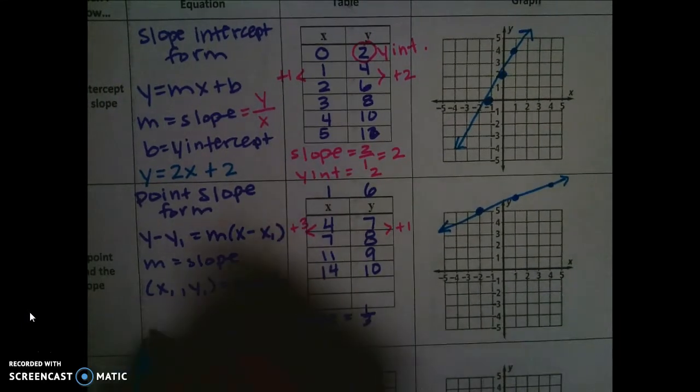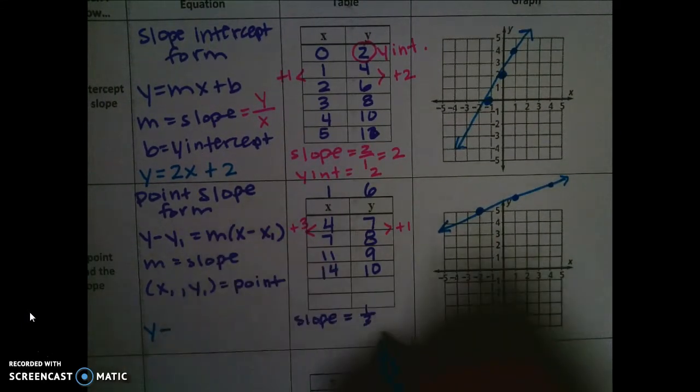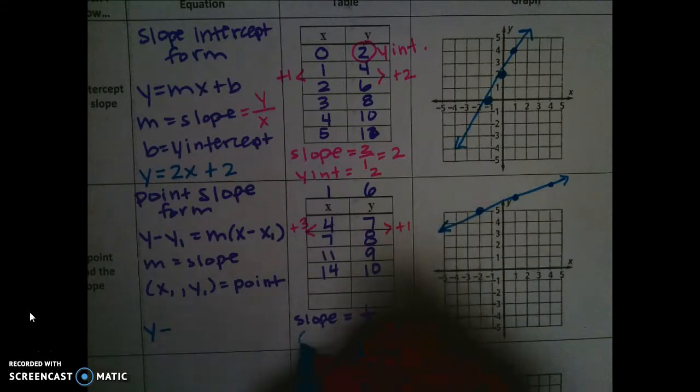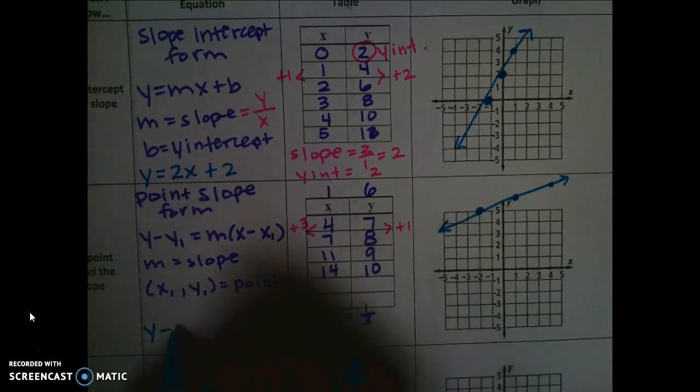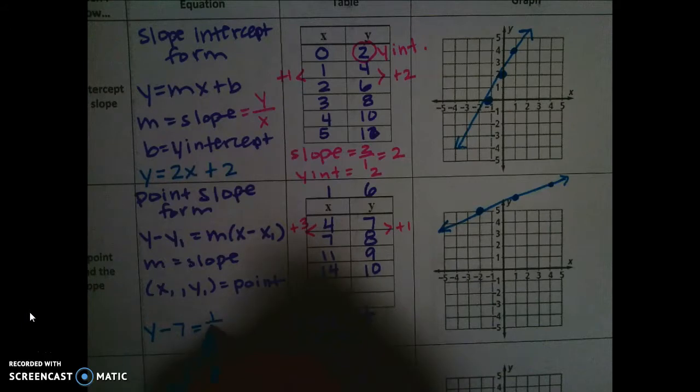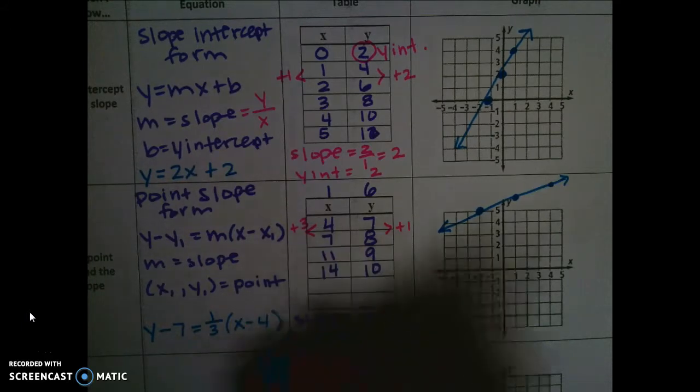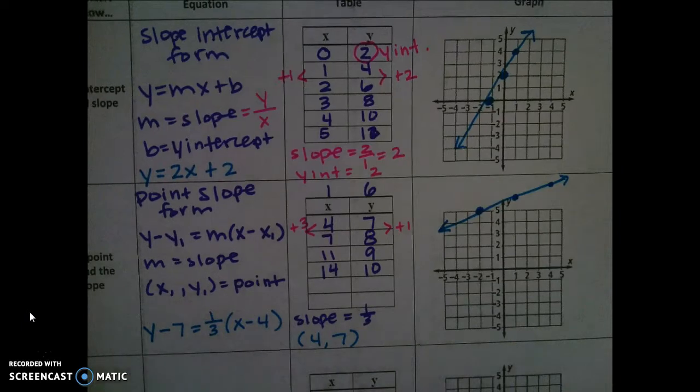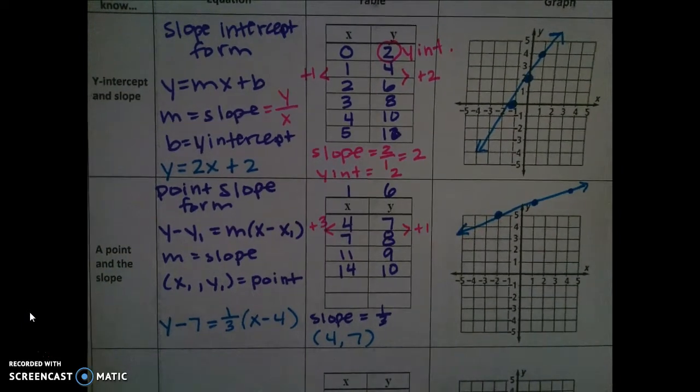So then my equation would be y minus, since this was my point for 7 to start with, y minus 7 equals 1 third, and then in parentheses, x minus 4.